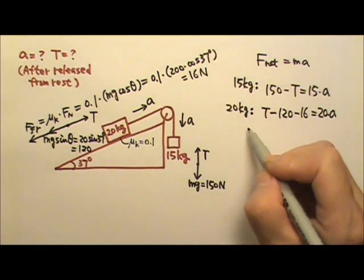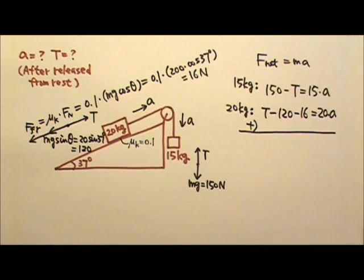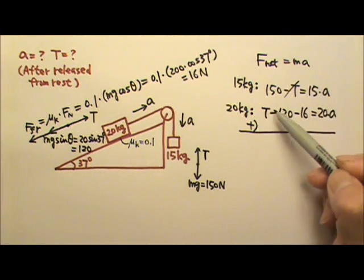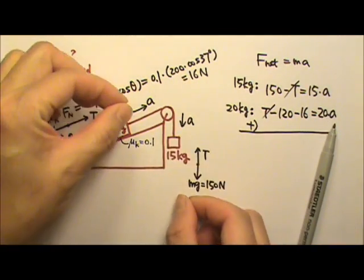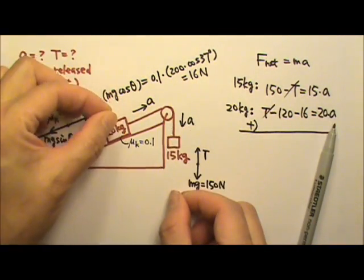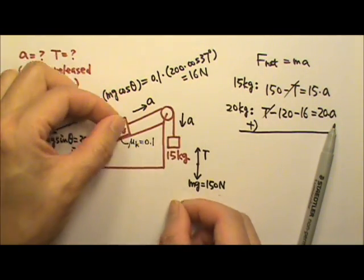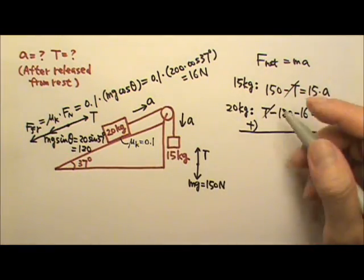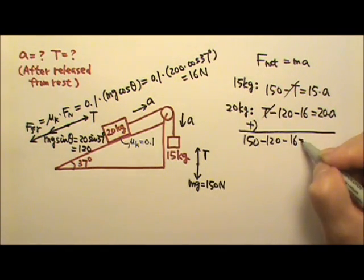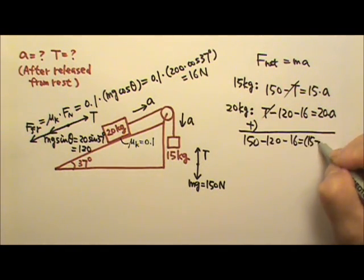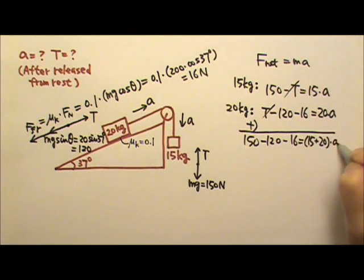Again, it can be convenient for us to stack them and add them together. And again, this internal force tension would cancel because the tension is the force between the two boxes, and it's action force and reaction force. So this is 150 minus 120 minus 16 equals 15 plus 20 A.